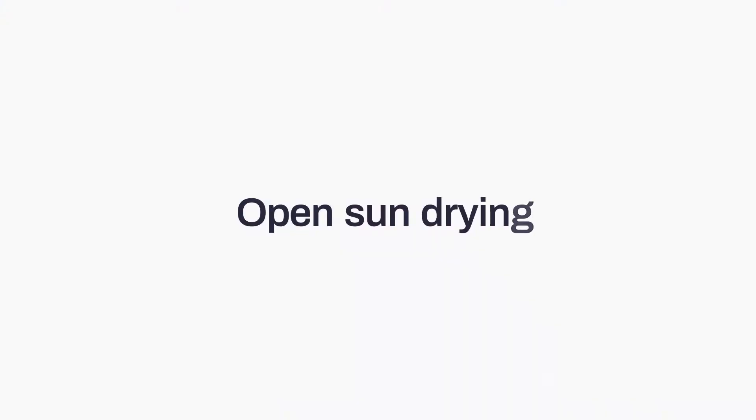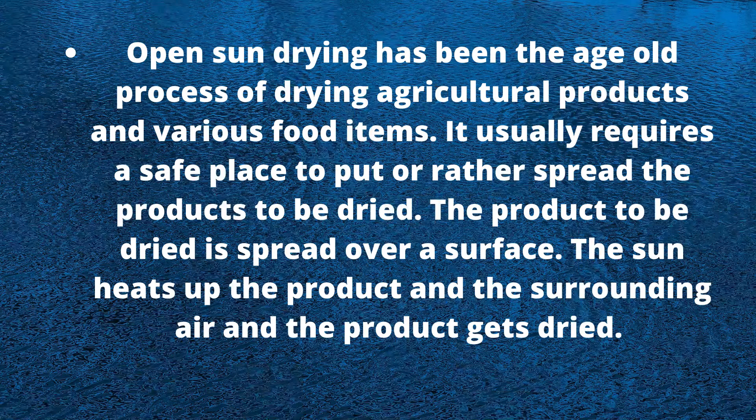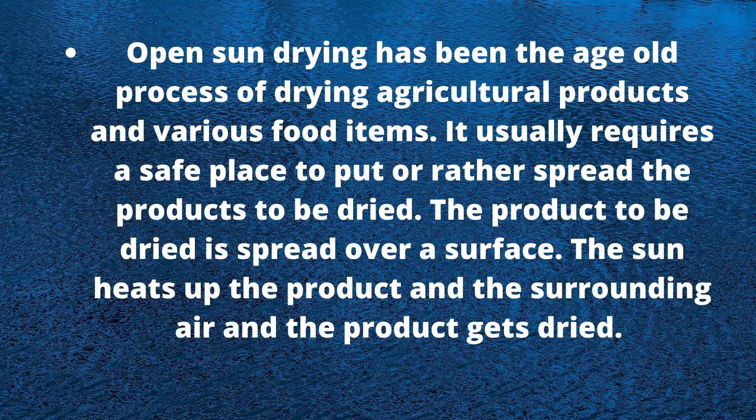Depending on how solar energy is collected and utilized to dry the products, various drying modes are available: open sun drying and solar drying. Open sun drying has already been discussed in detail. In solar drying, the solar energy is not directly used by the crop. Open sun drying has been the age-old process of drying agricultural products and various food items.